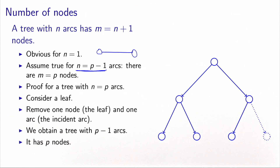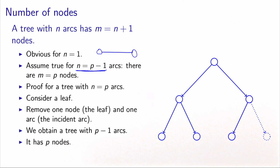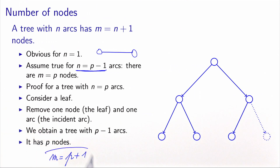So we obtain a tree with p minus one arcs, and using the induction assumption, we know that this tree has p nodes. And because it has been obtained by removing one node — the leaf — the number of nodes in the original graph is equal to p plus one. Therefore we have proved the result for n equals p, and by induction, it's true for any number of arcs in the tree.